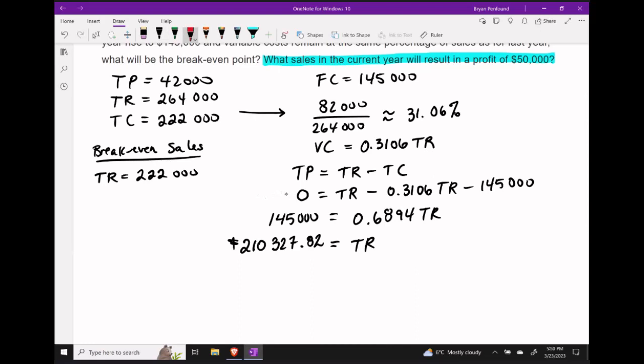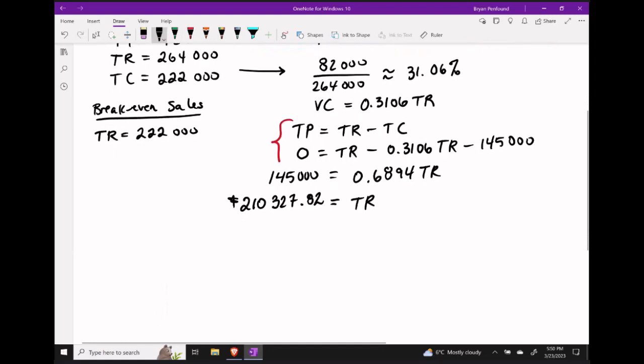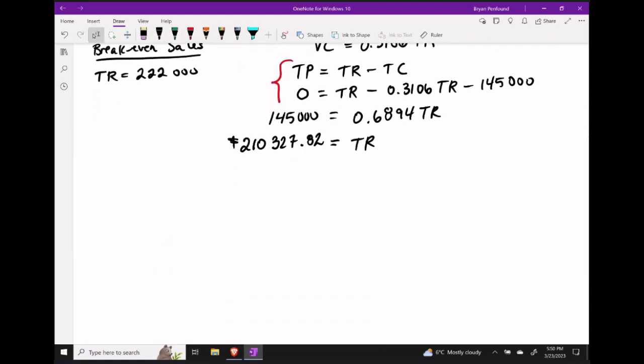And to answer that question, we can come back up to the total profit function that we made and add in that profit we would like to see. So for $50,000 in profit, we would have our total revenue minus our variable costs minus our fixed costs.